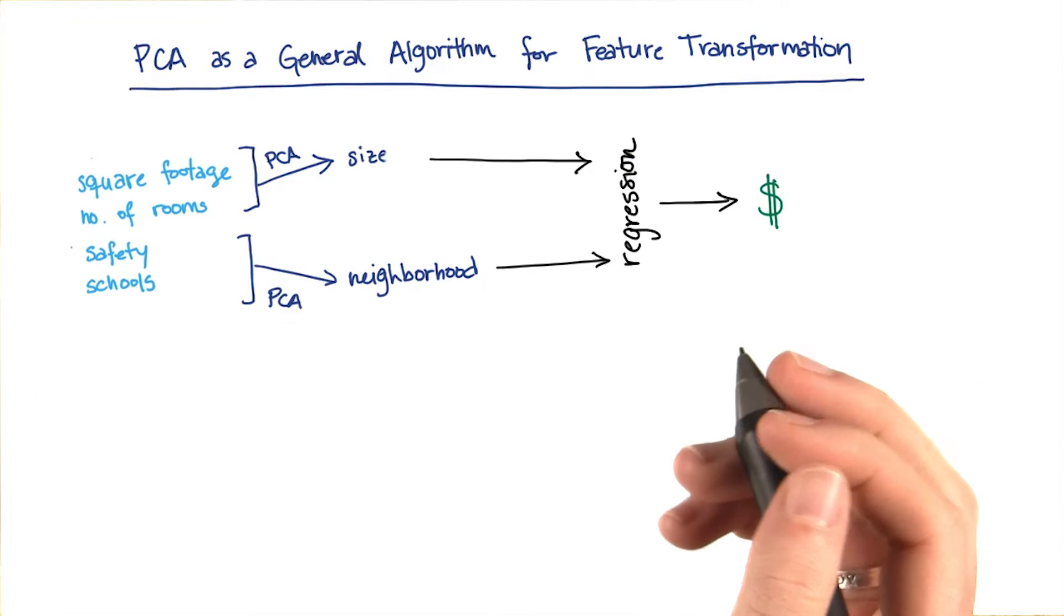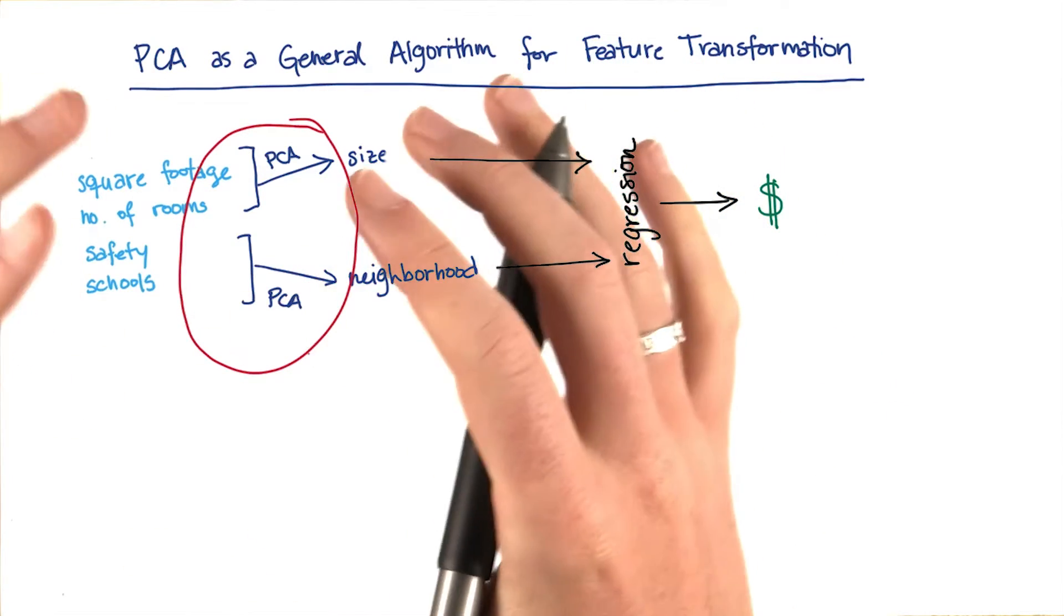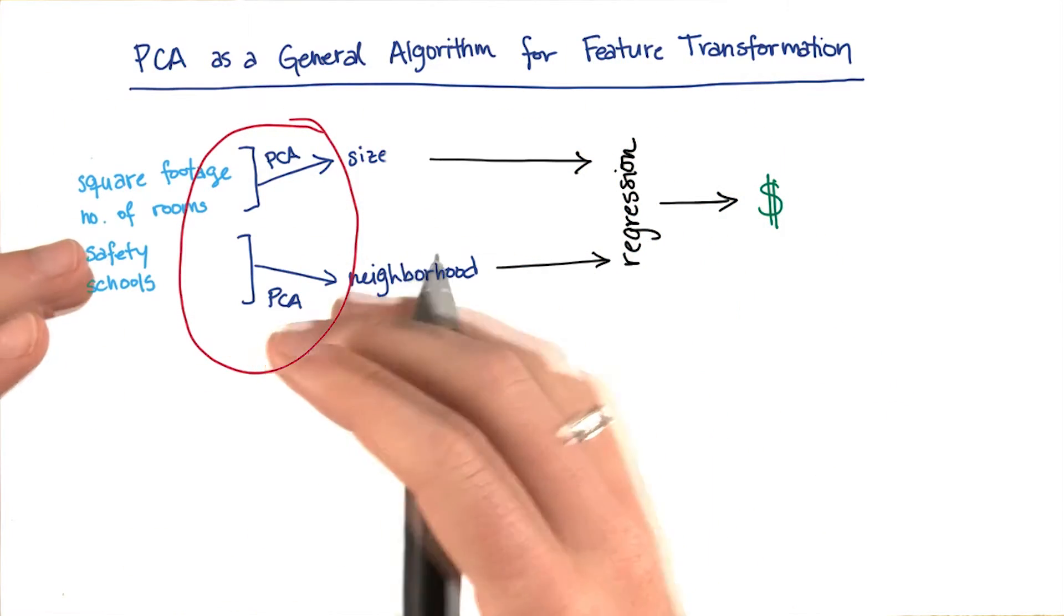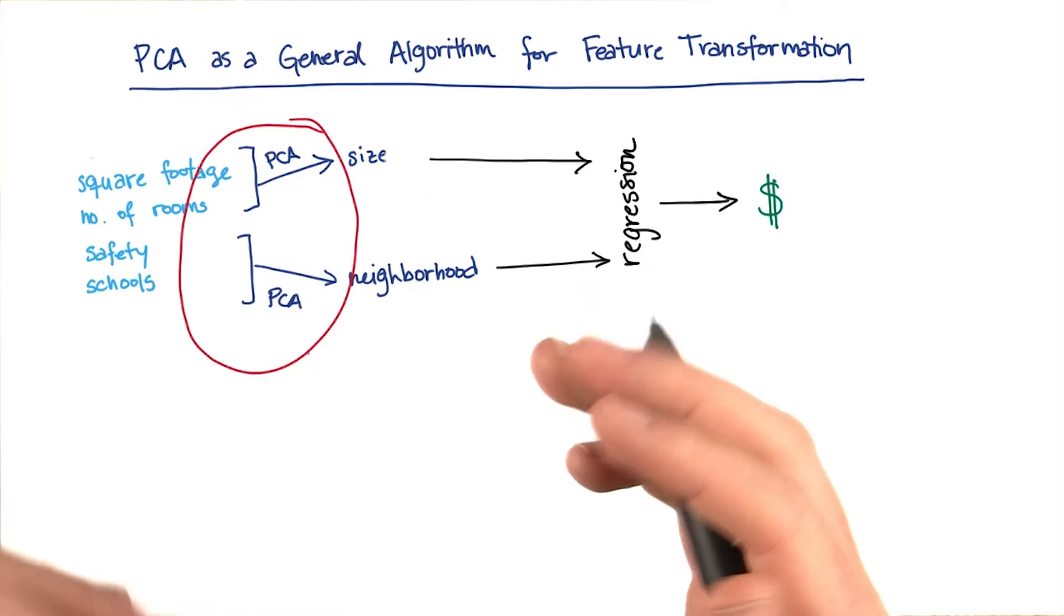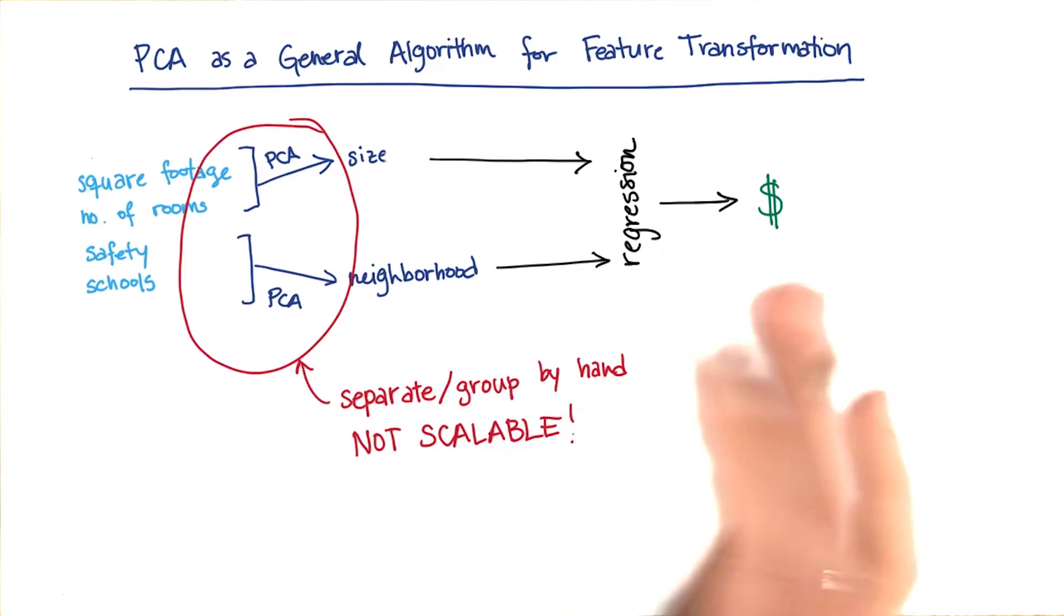But there's a little bit of a problem here, and maybe it's been bothering you. That's this step right here, that we manually took our input features and used our human intuition to figure out how we should group them. The problem with this manual process is that it's not scalable.